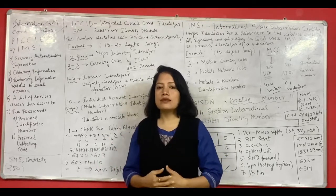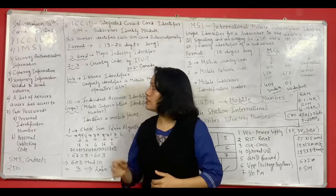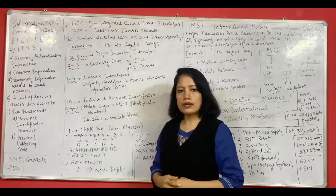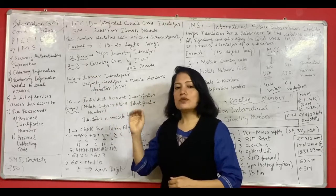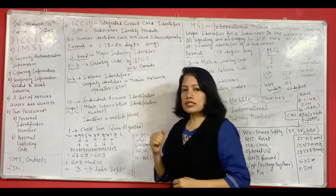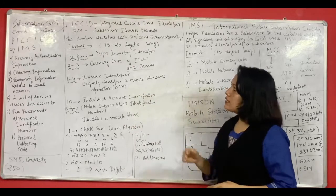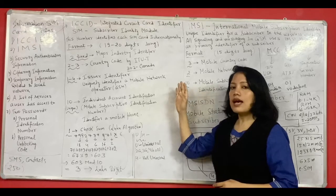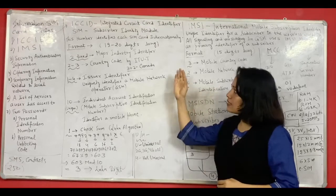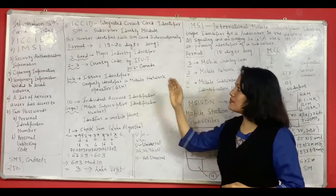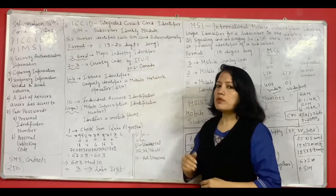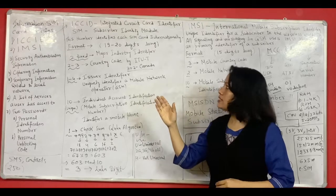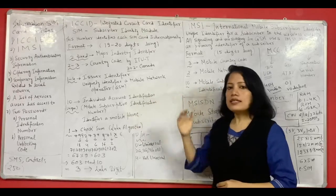Now here we are concerned with SIM number. So the first number that a SIM card contains is ICC ID number. This number is your SIM number. So what is the full form of ICC ID? ICC ID stands for Integrated Circuit Card Identifier and this is your SIM number where SIM stands for Subscriber Identity Module. This number actually identifies each SIM card internationally.